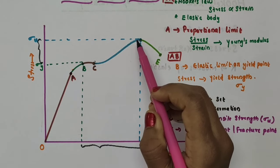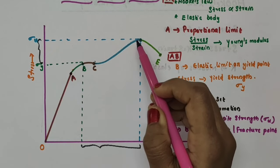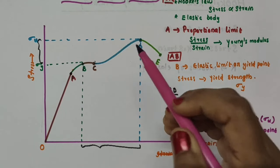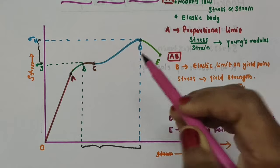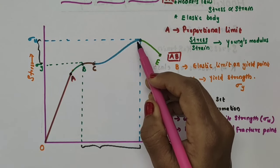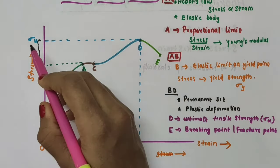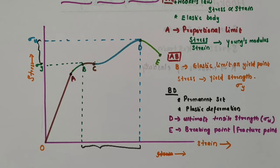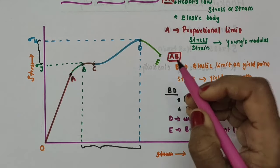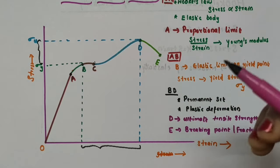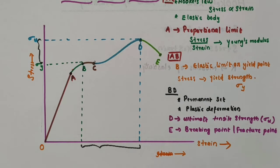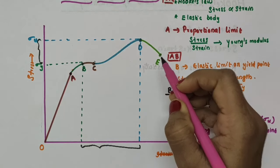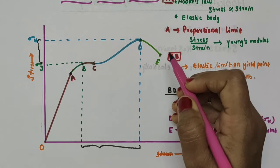Point D on the graph represents the maximum stress that a material can bear before breaking. Beyond this point, the material is likely to break easily. So point D is the ultimate tensile strength σU of the material. Beyond point D, additional strain is produced even by a reduced applied stress, and fracture occurs at point E. Point E is the breaking point or fracture point — the point at which failure of the material takes place.